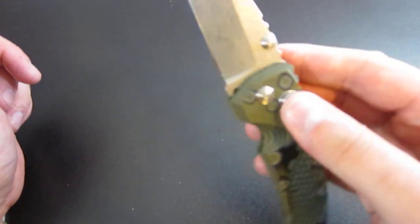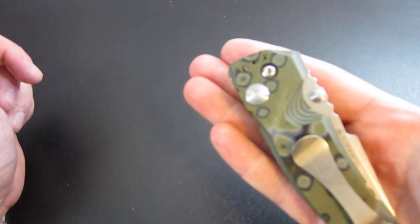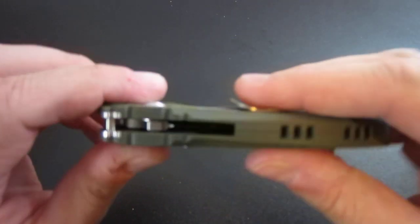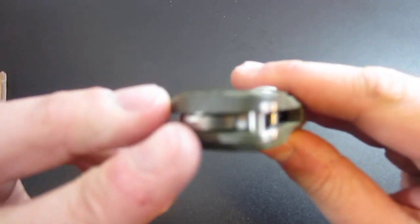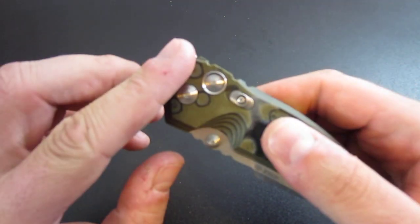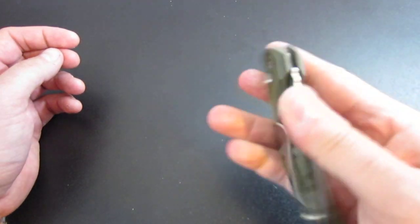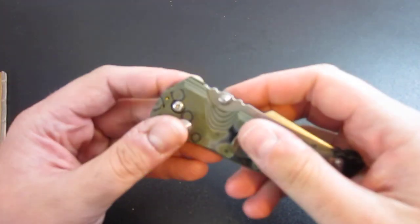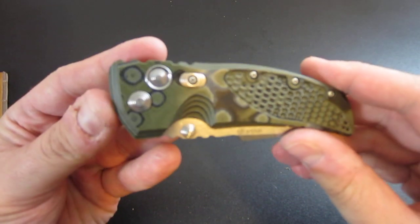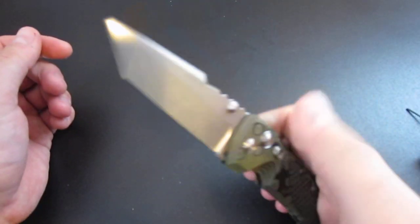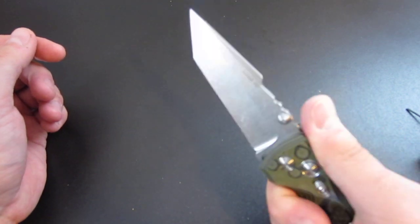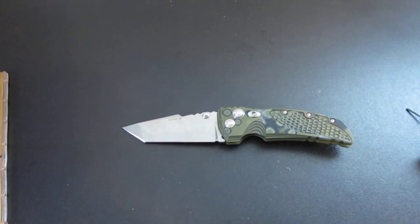So that's how a button lock works. Hopefully that was fairly clear. You can see the mechanism inside. It's a very nice lock system that I don't think gets as much play as it should. I'd like to see more makers utilize a button lock in a non-auto knife. Alright guys, take it easy.